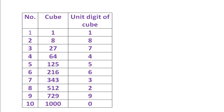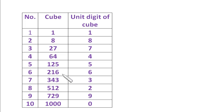Let's begin the method. First, let's make some observations. I have given a table where the numbers, their cubes, and the unit digit of the cube are listed. The cube of 1 is 1, cube of 2 is 8, cube of 3 is 27, cube of 4 is 64, cube of 5 is 125, cube of 6 is 216, cube of 7 is 343, cube of 8 is 512, cube of 9 is 729, and cube of 10 is 1000.